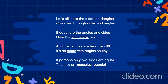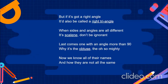If equal are the angles and sides, here the equilateral lies. And if all angles are less than 90, it's an acute with angles so tiny. If perhaps only two sides are equal, then it's an isosceles people. But if it's got a right angle, it'd also be called a right triangle.